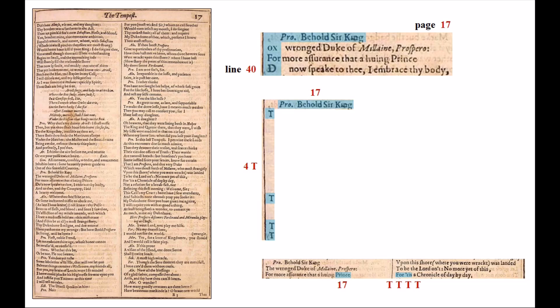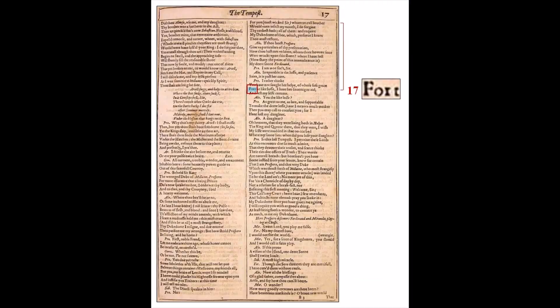I think the most obvious place to find a 1740 code would be page 17, line 40. And here in The Tempest, the opening play of Shakespeare's First Folio, we find three by counting the lines, characters, and words. Each example of 1740 is focused around Prospero saying, 'Behold, Sir King.'